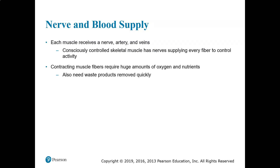Each muscle receives a nerve, an artery, and veins. The artery supplies blood to the muscle, and veins drain blood away from the muscle and remove carbon dioxide and other waste. Consciously controlled skeletal muscle has nerves supplying every fiber to control activity. Contracting muscle fibers require huge amounts of oxygen and nutrients and need waste products removed quickly, which means they need a good blood supply.